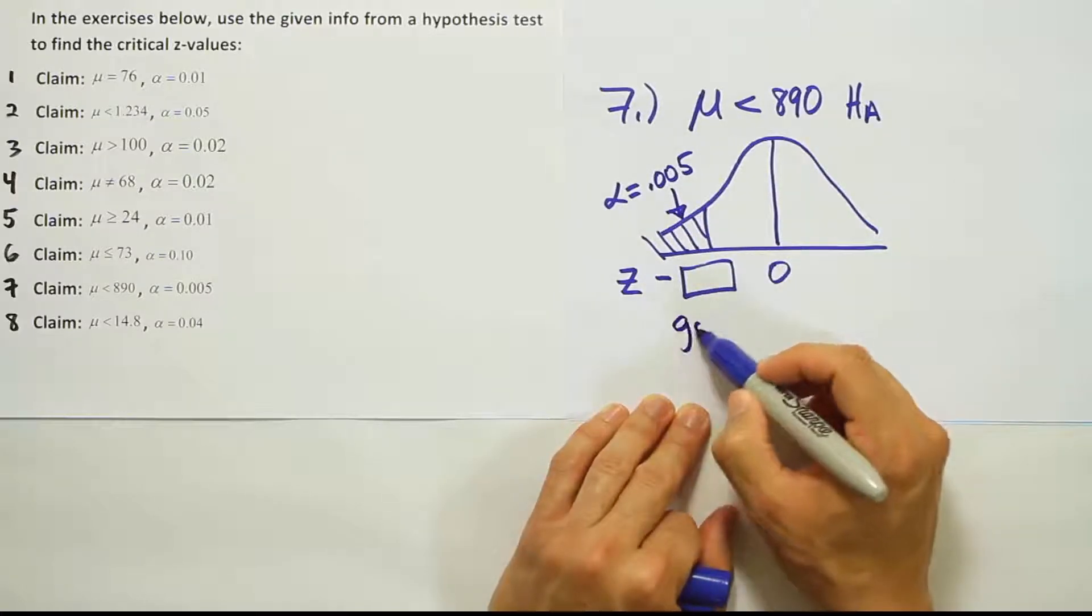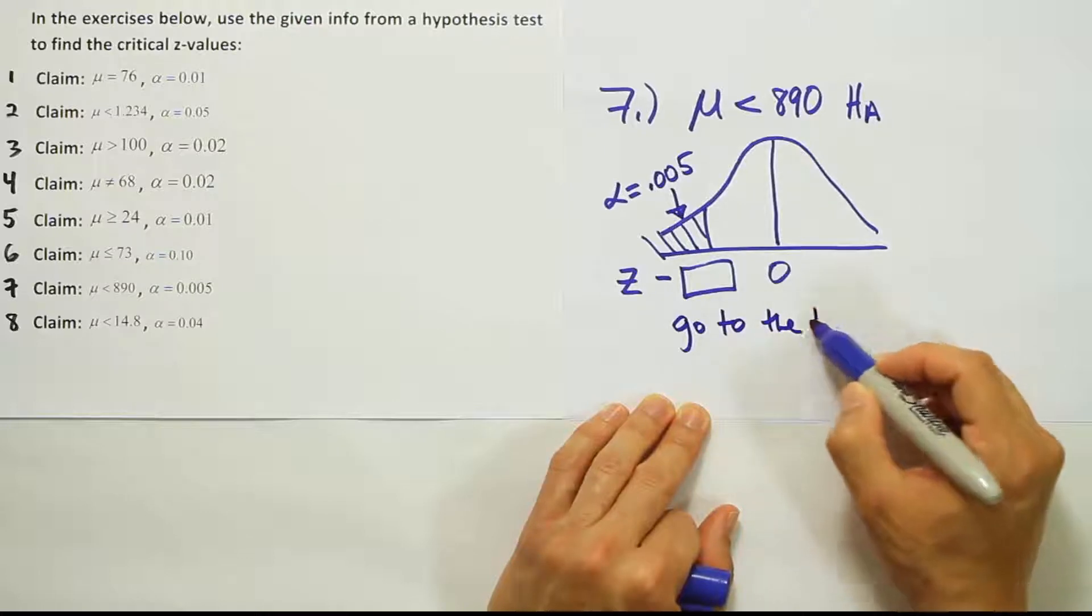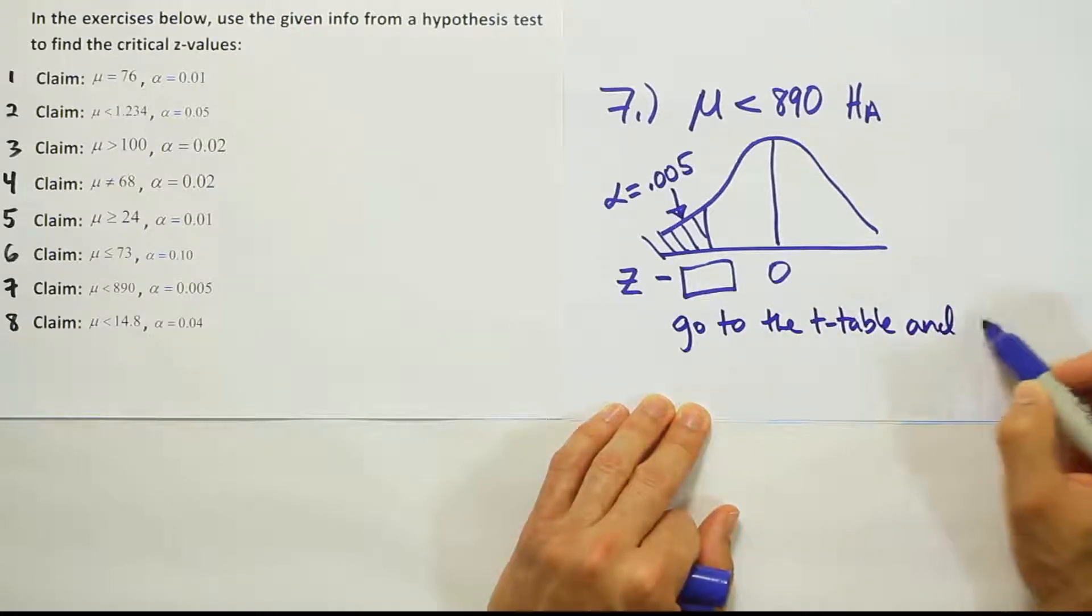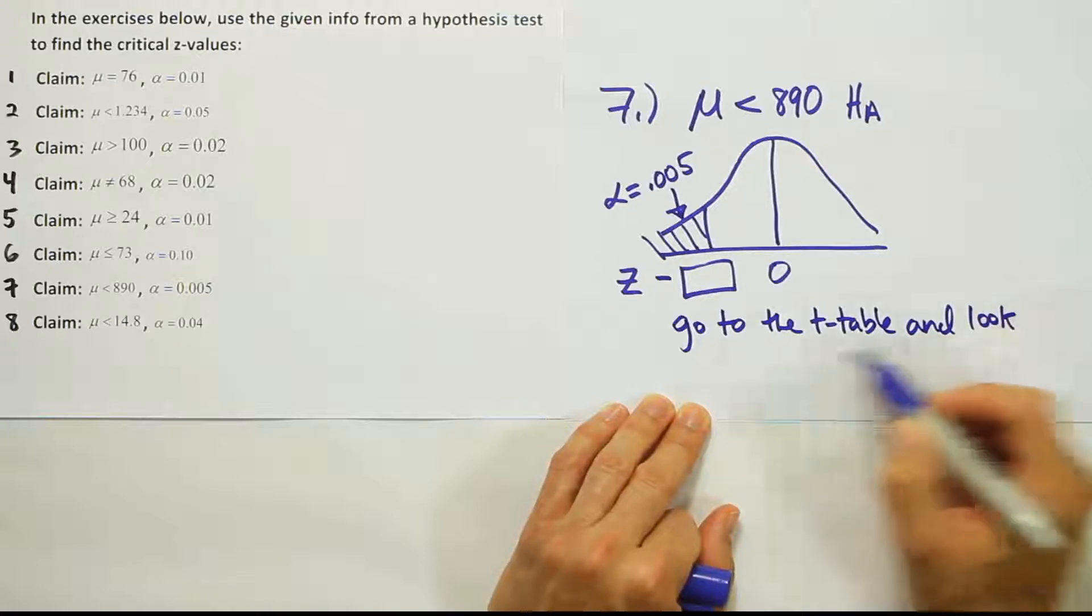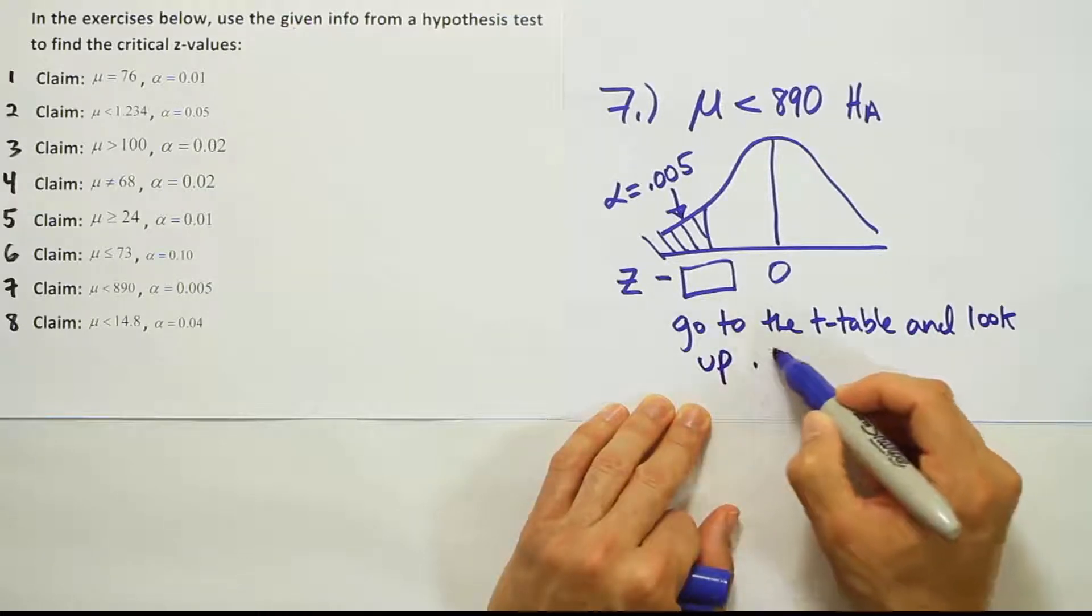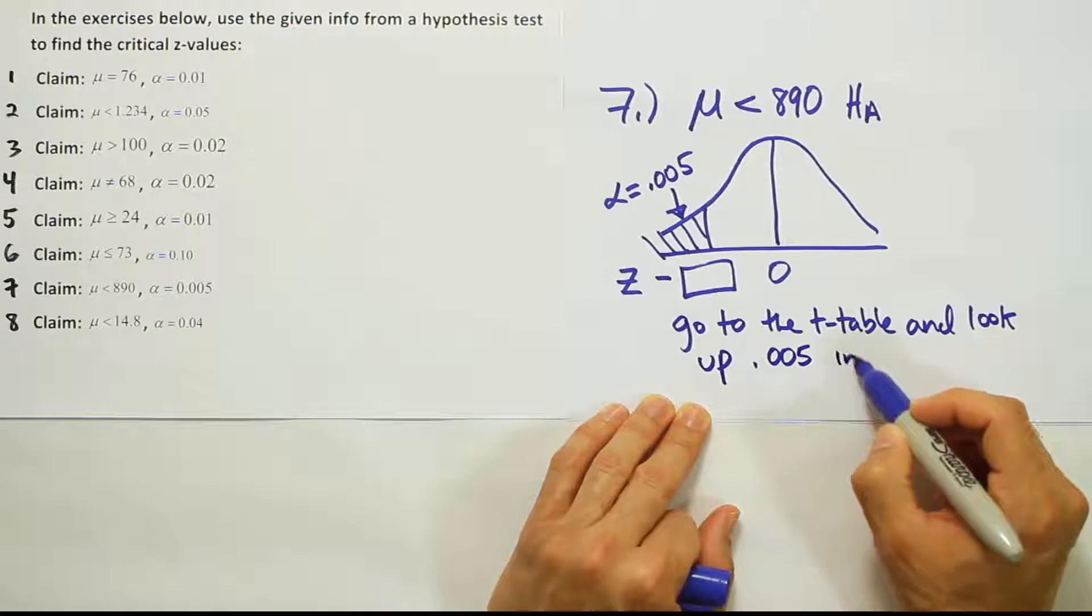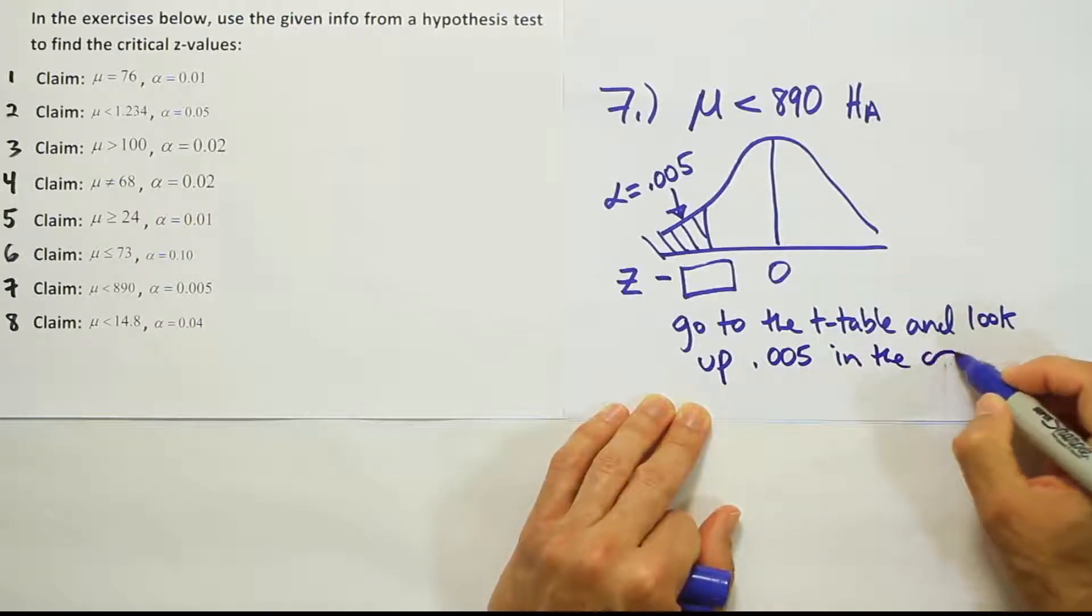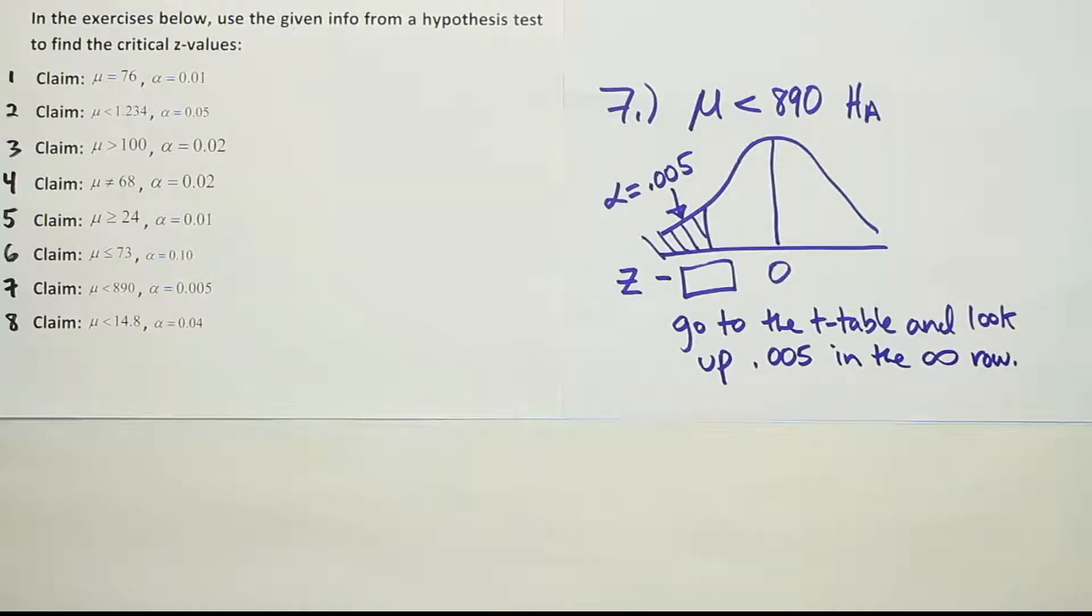So you're going to go to the t-table and look up 0.005 in the infinity row. Let's look that up in the infinity row on the t-table to get our critical z-value.